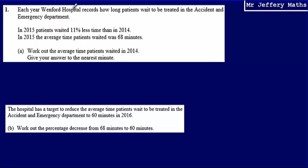Here we're told that each year, Wenford Hospital records how long patients wait to be treated in the accident and emergency department. In 2015, patients waited 11% less time than in 2014. In 2015, the average time patients waited was 68 minutes. We're asked to work out the average time patients waited in 2014.